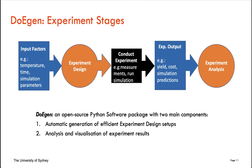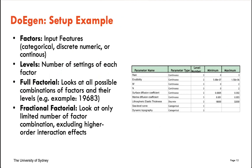DoEgen focuses on two main components: first, the automatic generation of efficient experiment design setups, and second, the analysis and visualization of the experiment results. The most tricky part for building this software package is actually the first step — generating the optimal design — and most of the development time went into this.